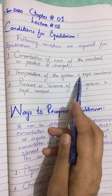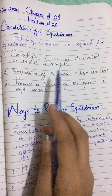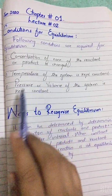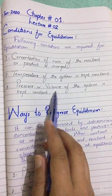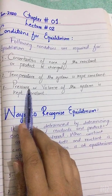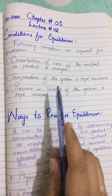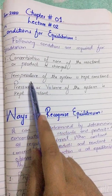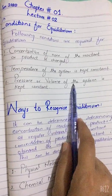For example, there is a reaction occurring at room temperature. Whenever you increase the temperature, it may get disturbed and the equilibrium could not be established. Similarly, the pressure and volume of the system must be kept constant. If you change the pressure, the direction of the reaction may change, and a change in volume also disturbs the reaction. So all these conditions must be fulfilled for the establishment of equilibrium.